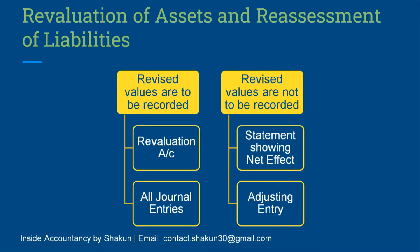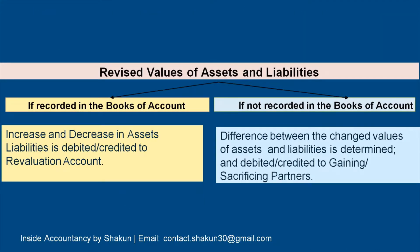The revaluation of assets and reassessment of liabilities can be done through two ways. First, when the revised values are to be recorded in the books of accounts — then the firm needs to prepare the revaluation account, and all journal entries relating to writing off accumulated profits, reserves, goodwill, etc. are passed. Second, when the revised values are not to be recorded in the books — then the revaluation account is not prepared; only a statement showing net effect is prepared, and only one adjusting entry — gaining to sacrificing — is passed.